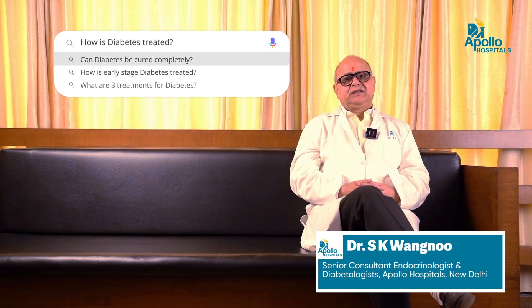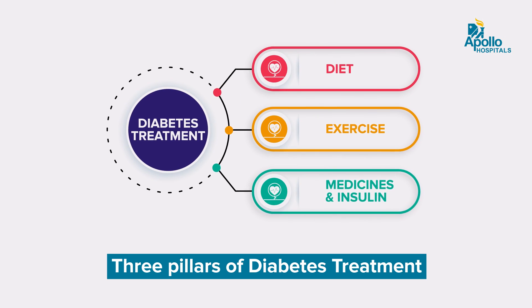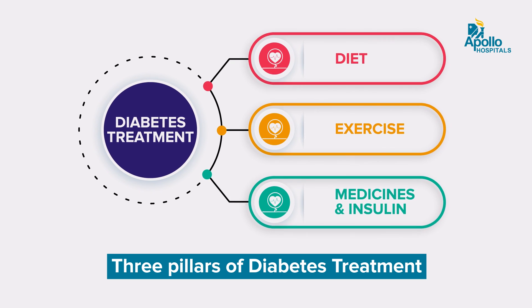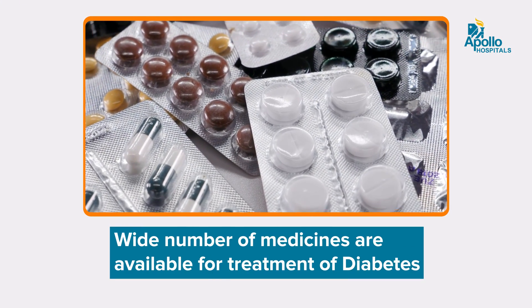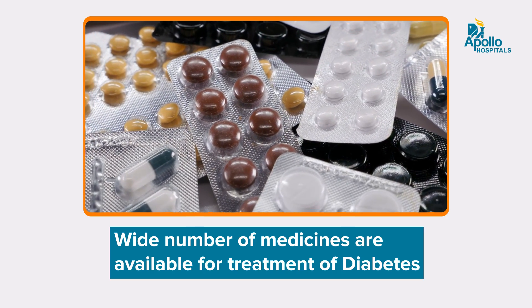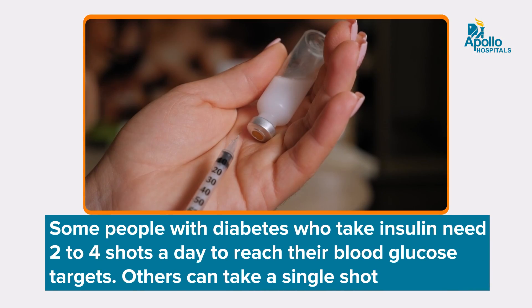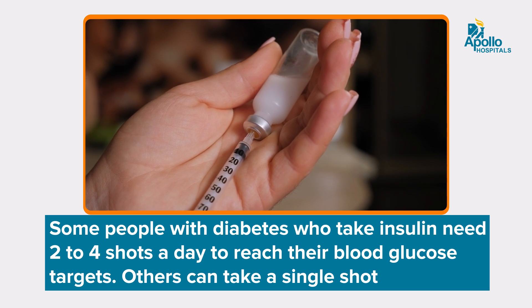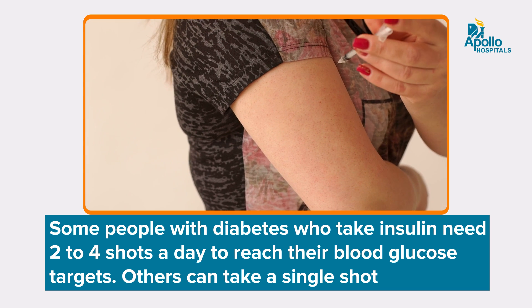How is diabetes treated? The three main pillars of diabetes treatment are diet, exercise, and medicines or insulin. There are various kinds of medicines available — different classes of drugs classified as sulfonylurea, biguanide, DPP-4 inhibitor, SGLT2 inhibitor, GLP-1 receptor agonist, and glucosidase inhibitor. When drugs fail to control blood sugar, the patient has to be on insulin. There are various types of insulin: a single shot called basal insulin, two shots called pre-mixed insulin, or multiple daily insulin injections consisting of one basal insulin and two to three shots of short-acting insulin.